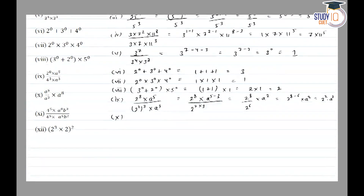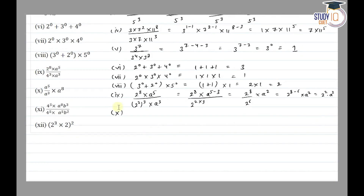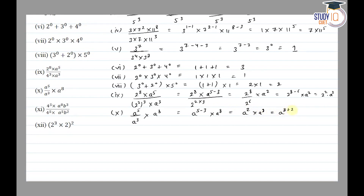Question number 10: a to the power 5, upon a to the power 3, into a to the power 8. This equals a power 5 minus 3 — dividing gives subtraction — so a squared, into a to the power 8. This equals a to the power 8 plus 2, equal to a raised to the power 10.